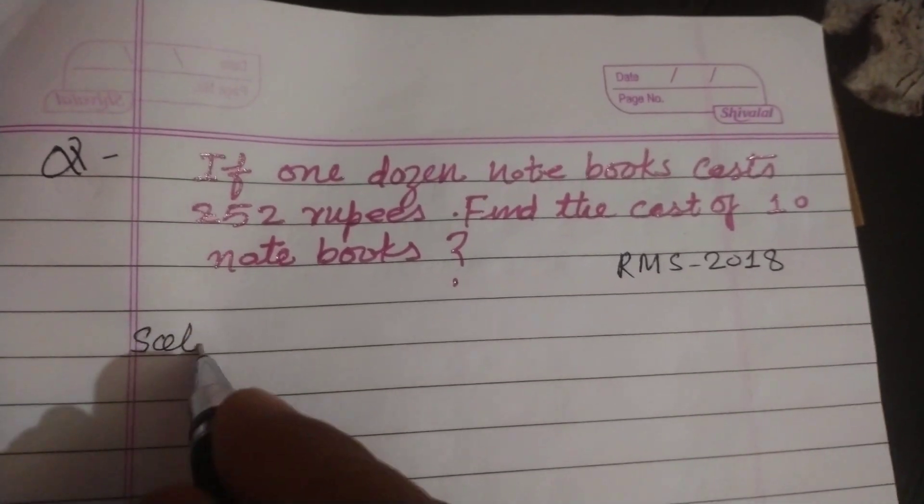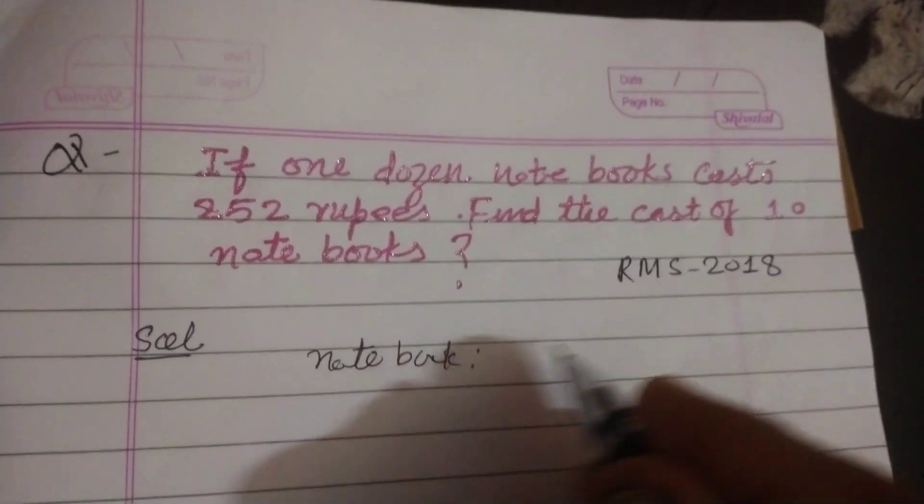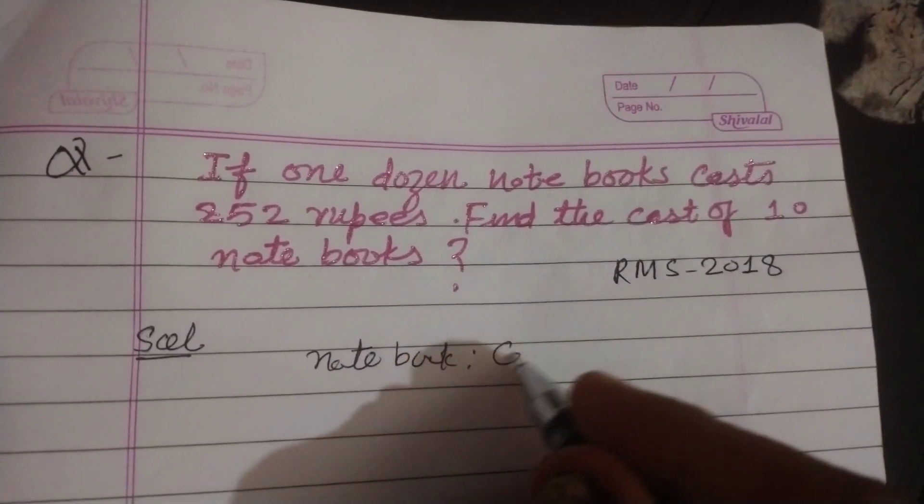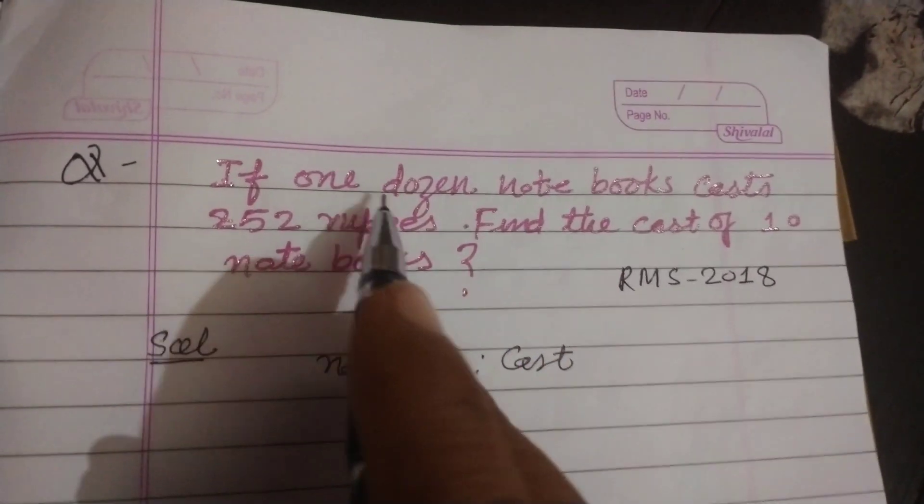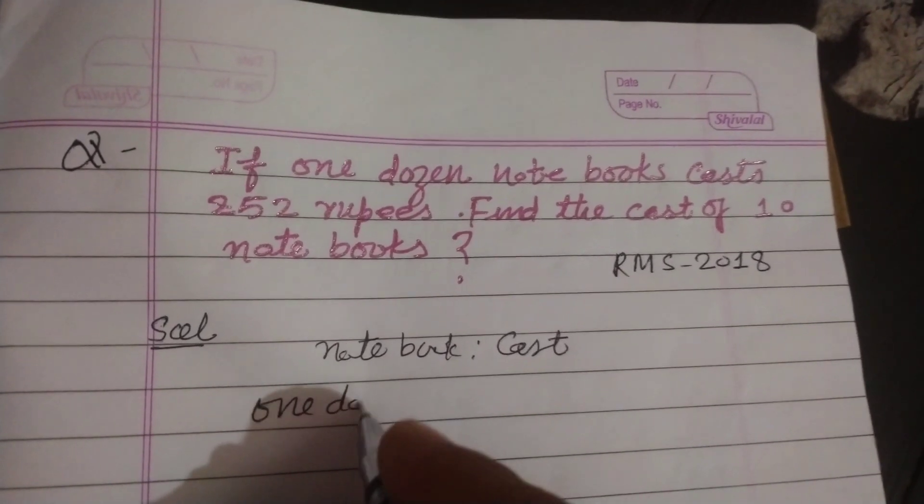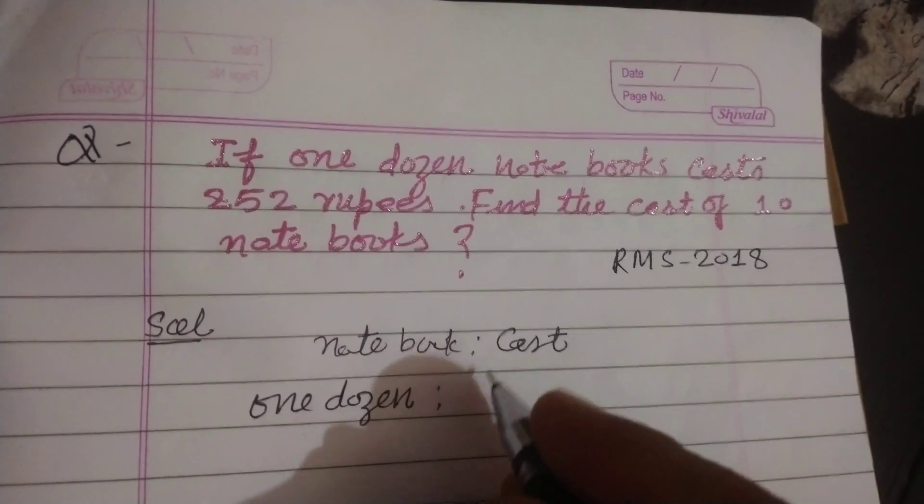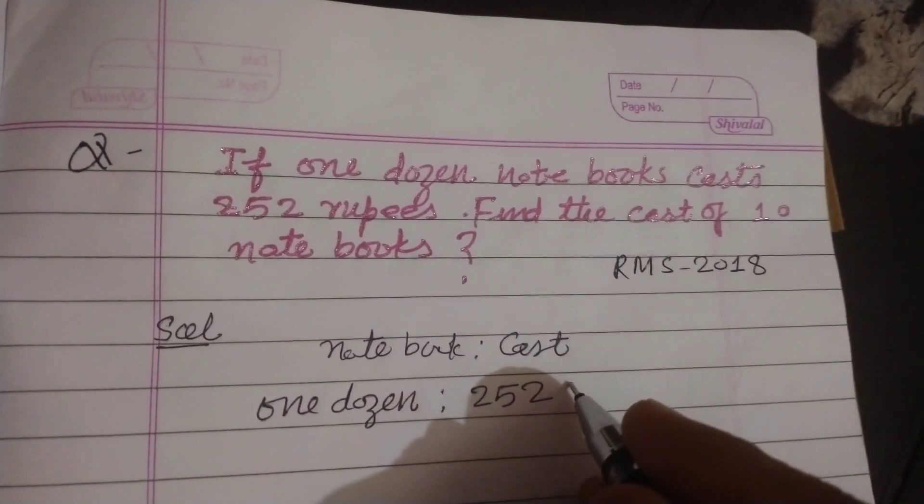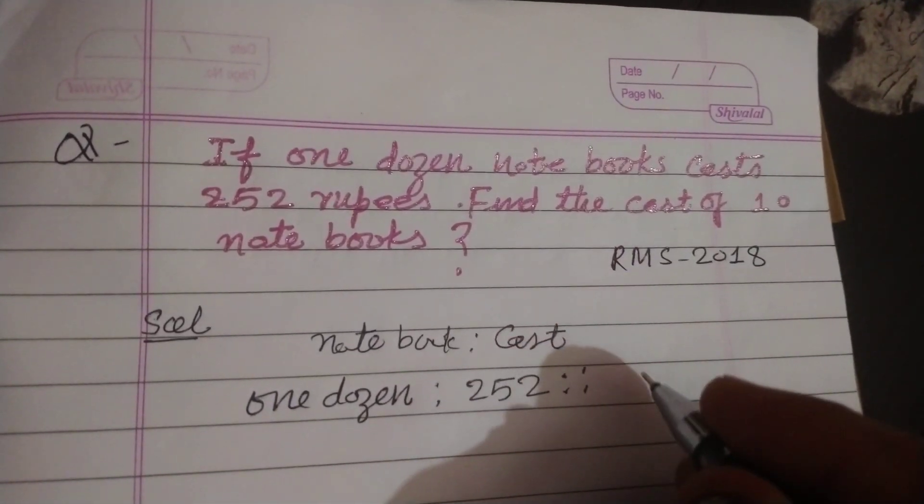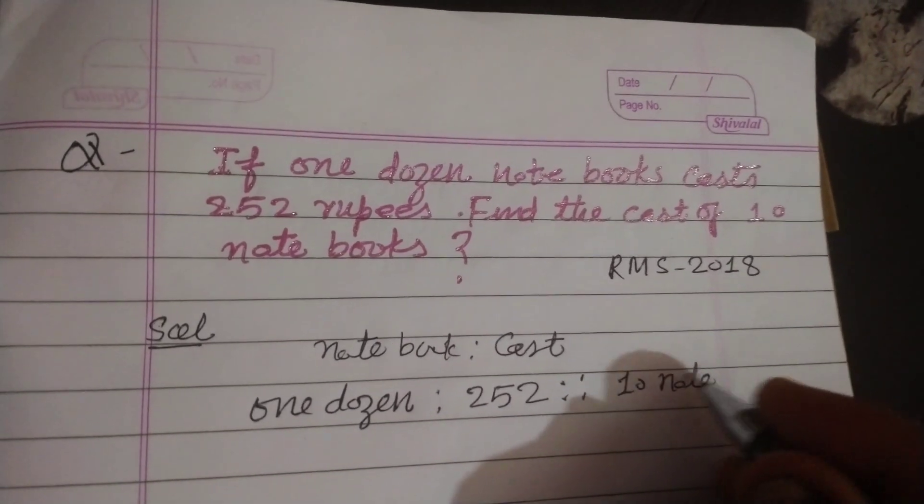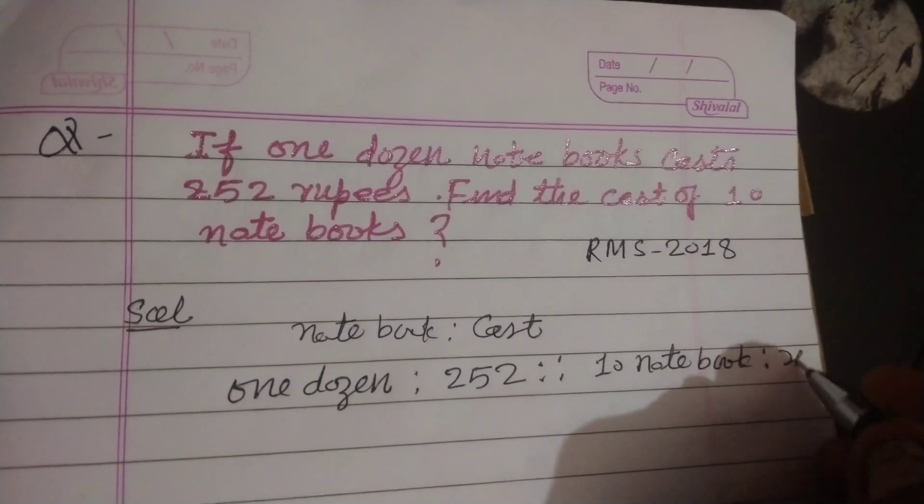So student, here notebook ratio cost is given. As you know by proportion, one dozen notebook ratio cost 252, proportion cost of 10 notebooks. So 10 notebook ratio cost, that cost is x.